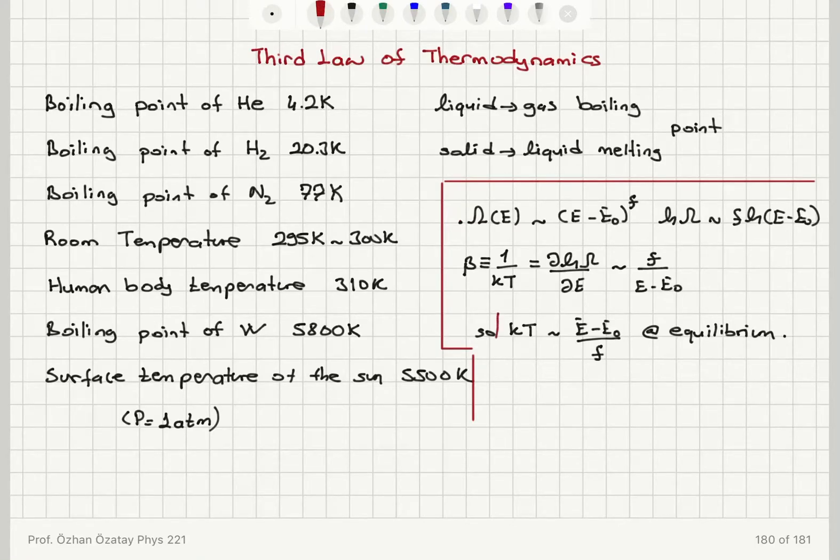So this was an important conclusion for absolute temperature. So one of the properties of absolute temperature is its meaning, microscopic meaning, is mean energy above ground state energy per degree of freedom.